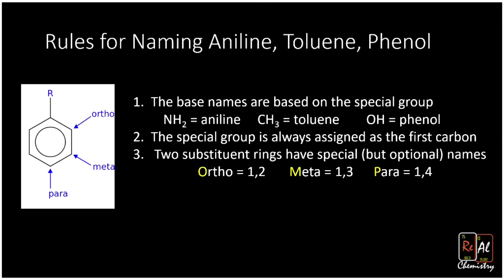The special group is always assigned as the first carbon. That means NH2 would be the first carbon in aniline, CH3 would be on that first carbon in toluene, and OH would be on that first carbon in phenol. In other words, when we think about our ortho, meta, and para numbering, our group is always going to be our special group, whether that's NH2, CH3, or OH.